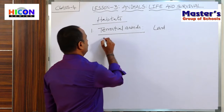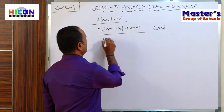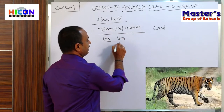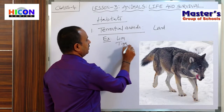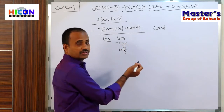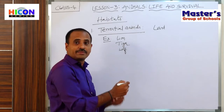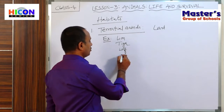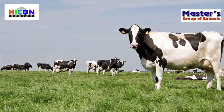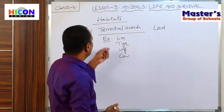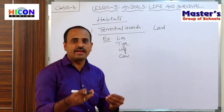For example, the examples for terrestrial animals are lion, tiger, and wolf. And also we have seen some animals in our villages on the roadside, like cows and buffalo. All these are examples of terrestrial animals because all these animals live on the land.